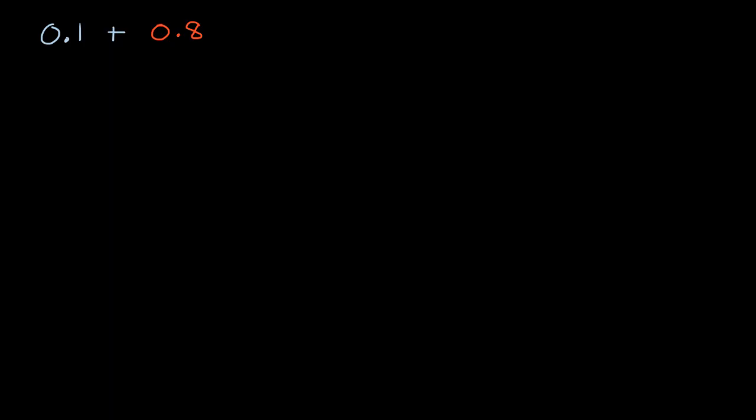Well, there's a couple of ways to think about it. You could say, hey look, 0.1, that is 1 tenth. And 0.8, that is 8 tenths. And so if I have one of something and I add eight more of that something, so I have 1 tenth and I'm gonna add eight more tenths, well, I'm gonna end up with nine of that something. In this case, we're talking about tenths. So that is going to be equal to nine tenths. That's one way to think about it.